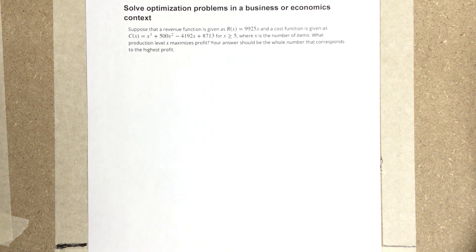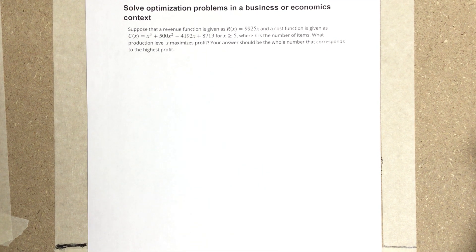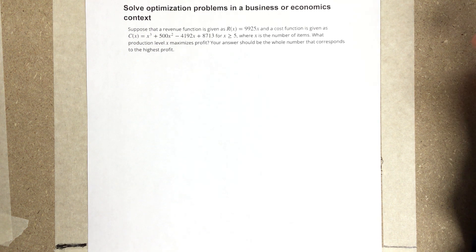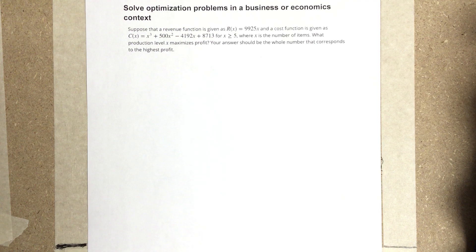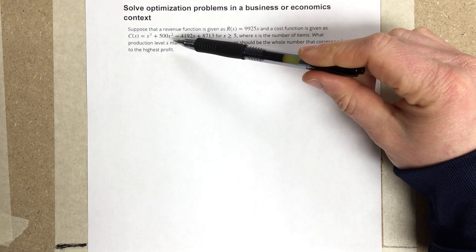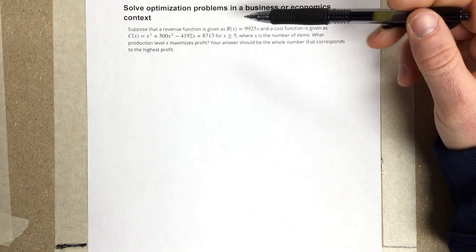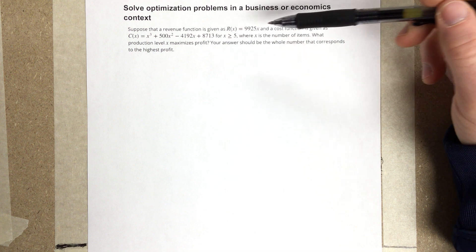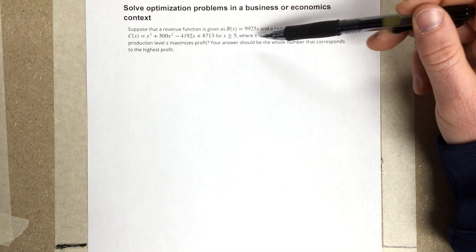Suppose that a revenue function is given as R(x) = 9,925x, and a cost function is given as C(x) equals this cubic for x ≥ 5. x is the number of items, so we have to at least have five items.